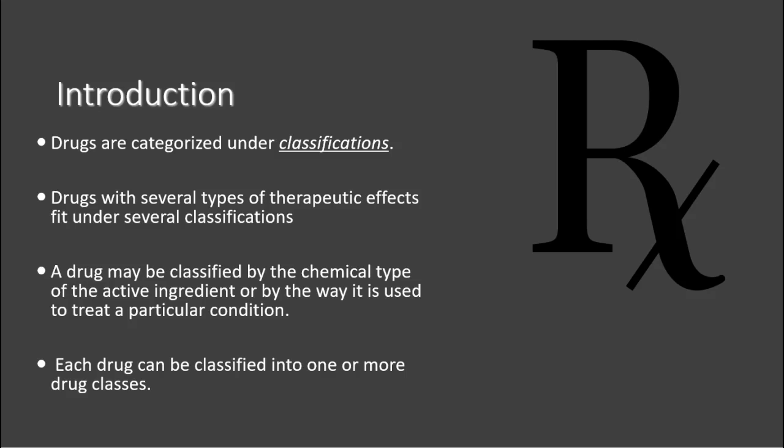Drugs are categorized under classification, so all drugs are in different classifications. Drugs deal with several types of therapeutic effects and fit under several classifications, so they can go across different classifications. A drug may be classified by the chemical type, the active ingredient, or by the way it is used to treat a particular condition. Each drug can be classified into one or more drug classifications.